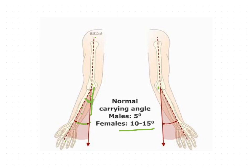To summarize, the carrying angle mainly depends upon the articular configuration of the humero-ulnar joint, which causes its disappearance during flexion or extension of the elbow joint, and explains why females have larger carrying angles than males. In the next session we are going to see the mobility and stability of the elbow joint. Thank you.